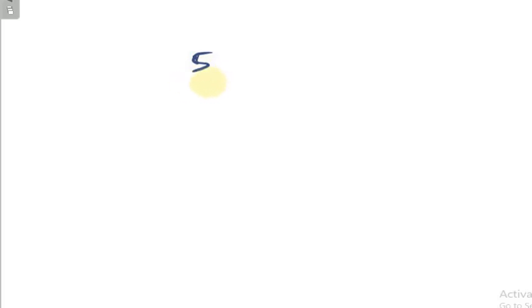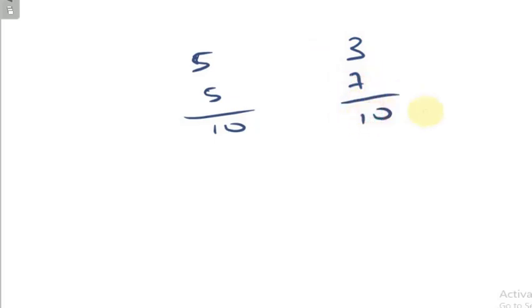The complement of 5 is again 5. Add these two numbers, you get 10. For example, take the number 3 — the complement is 7. Add them, you get 10. Take the number 4 — the complement is 6, because 4 plus 6 gives you 10.